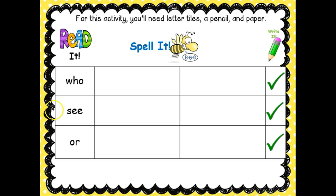Now let's take a look at the second word. Read this word to your learning coach. This word is 'see.' Use your letter tiles to spell the word, then write it on your paper. Pause this video to write the word. Now let's look at our last word. Tell your learning coach what this word is. This word is 'or.' Use your letter tiles to spell the word and write it on your paper. Continue this activity with the remaining sight words and pause this lesson to finish up with your student.